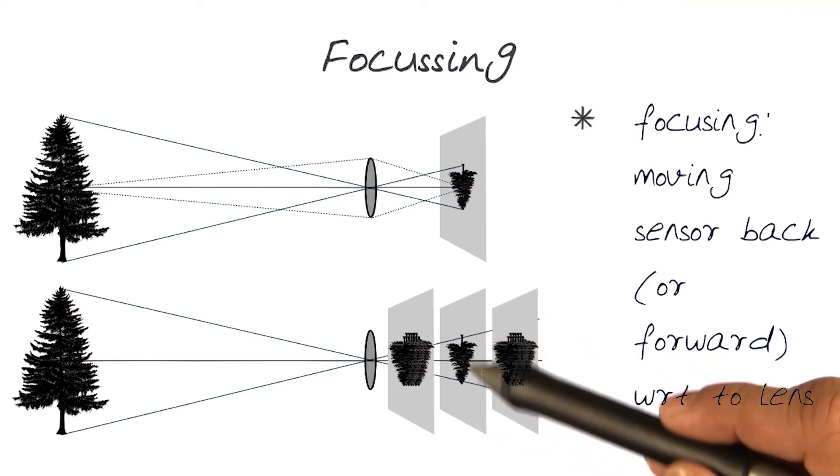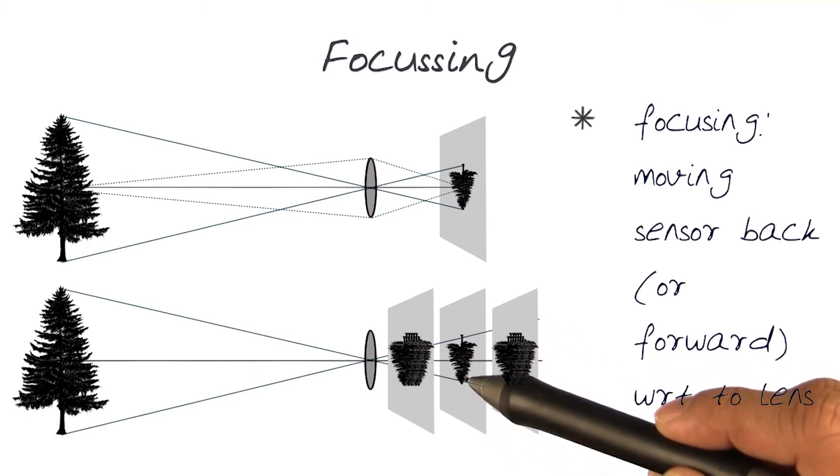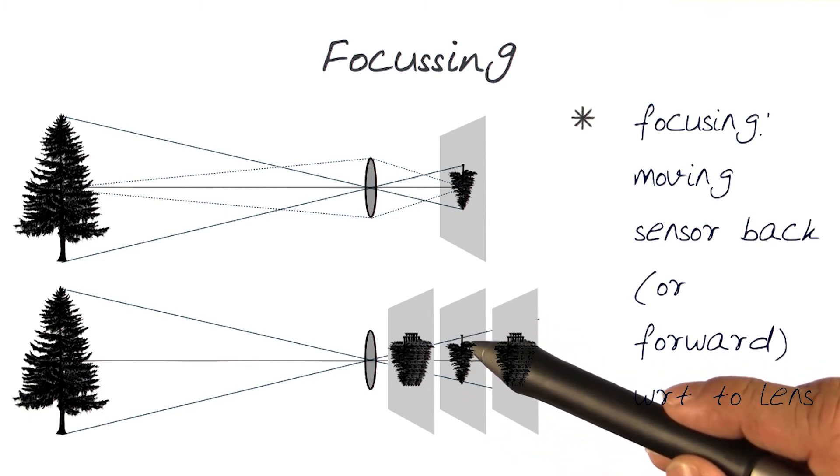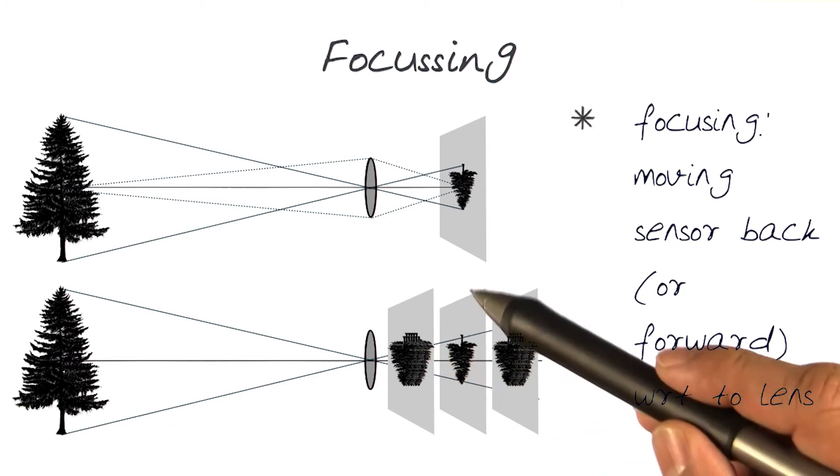The image plane has to be at the focal plane to generate a smooth, crisp image. If it's after or before the focal plane, you'll see blurriness.